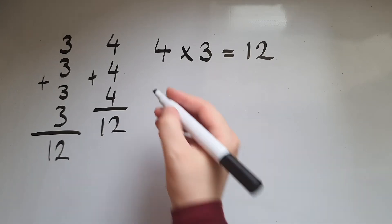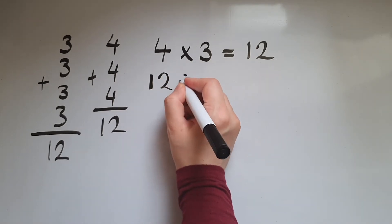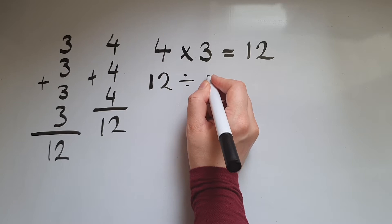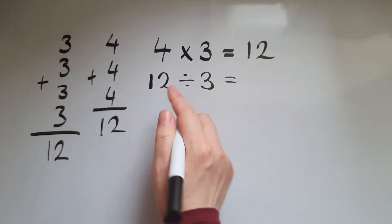In a very similar way, division is repeated subtraction. So if I do 12 divided by 3, that is trying to subtract 3 from 12.